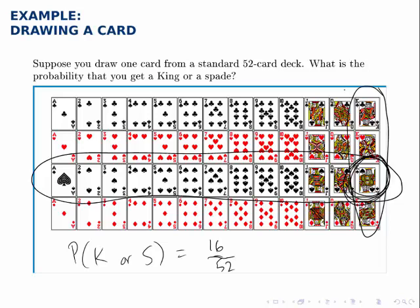You could also look at this deck and just add up all the cards that meet this description, a king or a spade. So you can start by adding up all the spades and then add up all the extra kings that you haven't already counted.